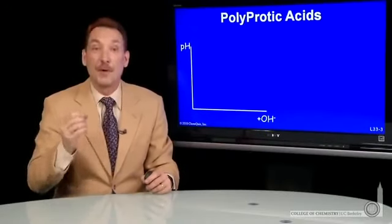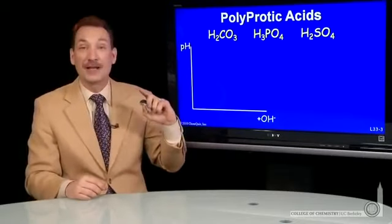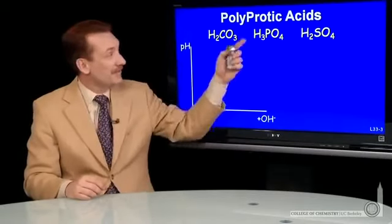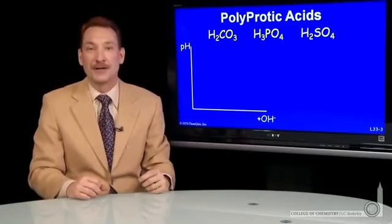Polyprotic acids are compounds with more than one acidic proton. Some examples are carbonic acid with two acidic protons, phosphoric with three, and sulfuric acid with two acidic protons.